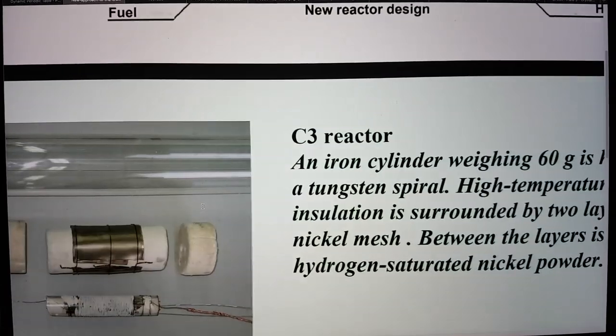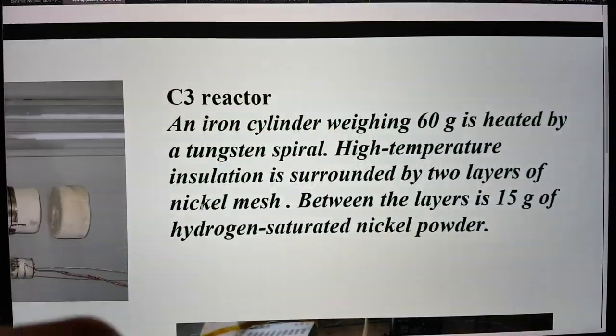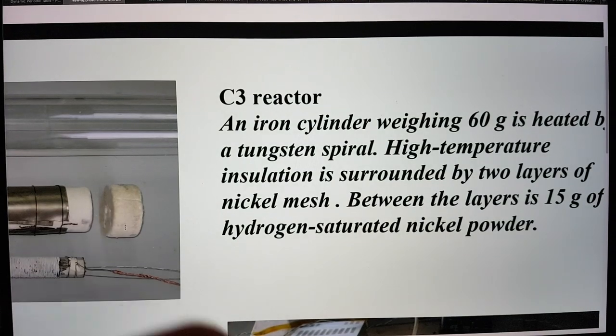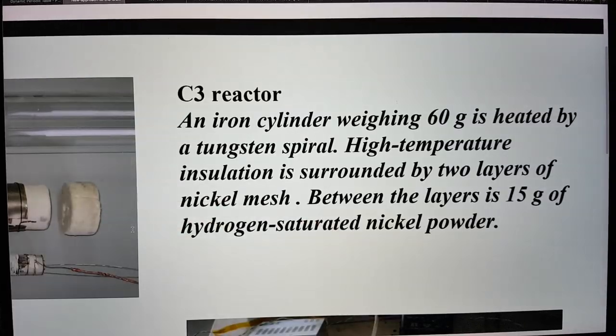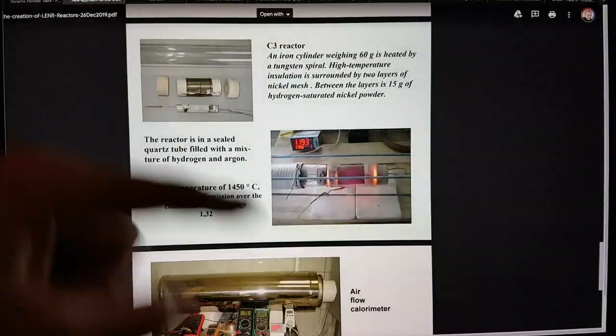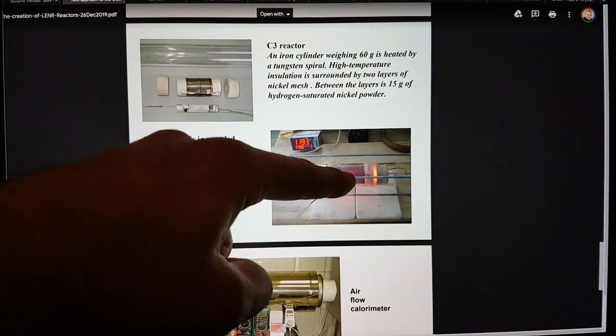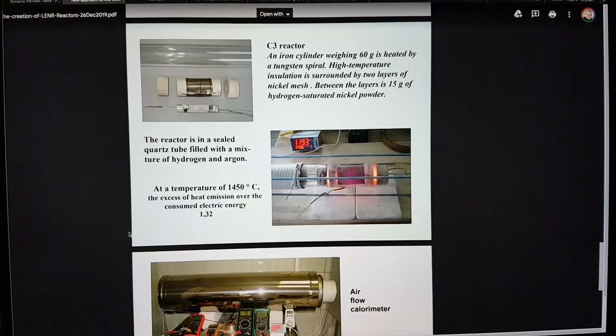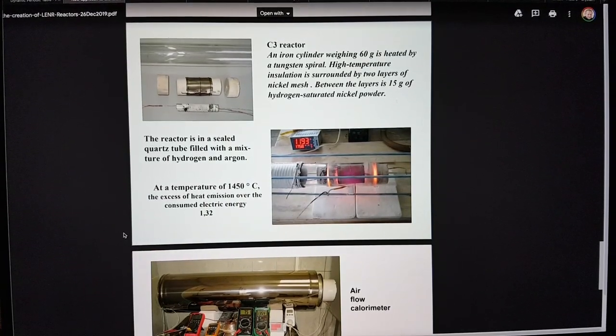And inside it, between the two layers of nickel mesh, the same type of nickel mesh as you're using in the reactor by Mizuno, he's put hydrogen-saturated nickel powder. And the other thing is that, effectively, these layers of mesh, they act as a mirror for the neutrinos on the inside. And then we'll talk about where that goes. It goes into this calorimeter.